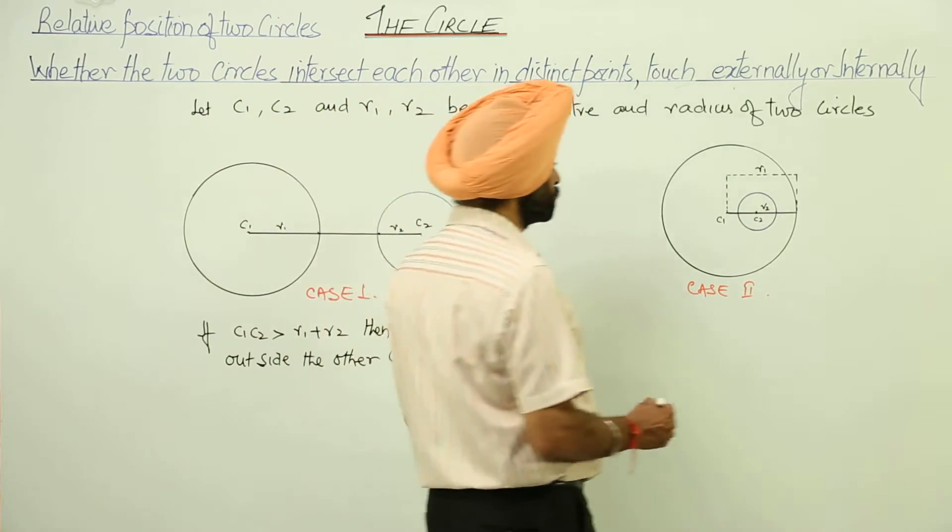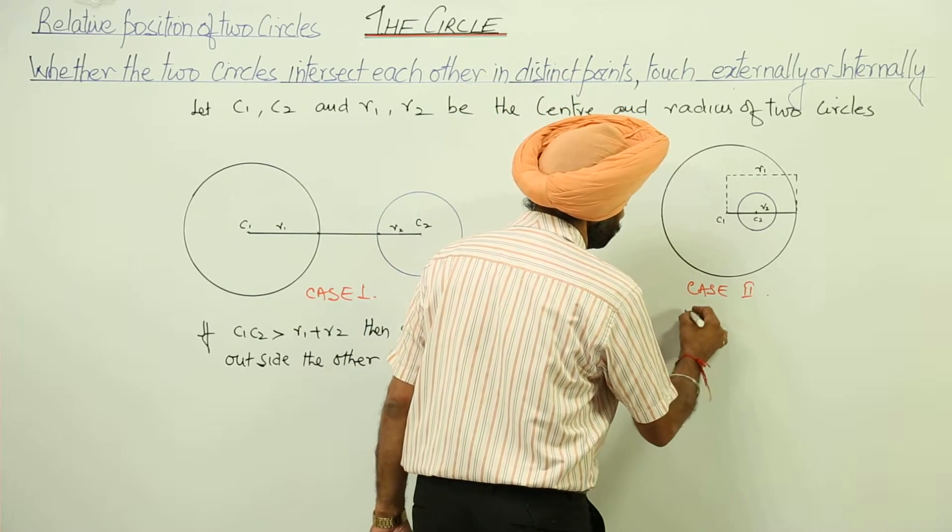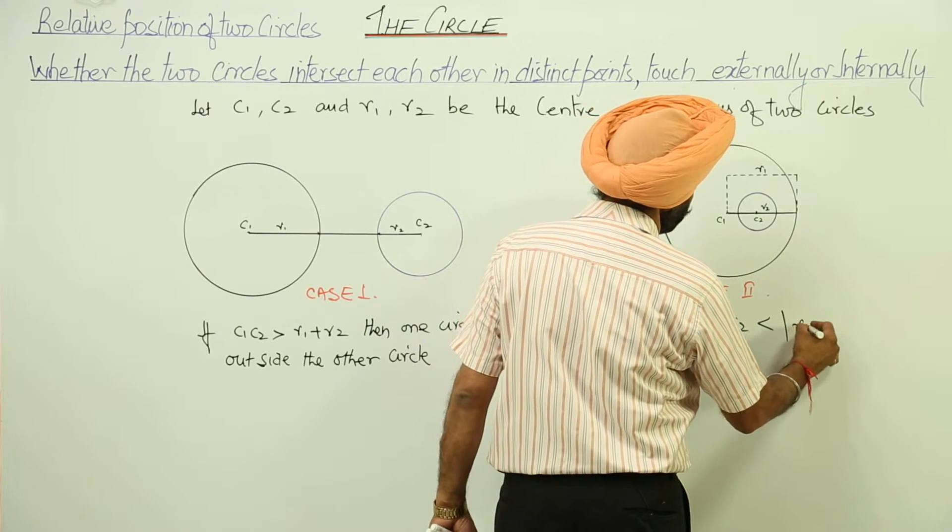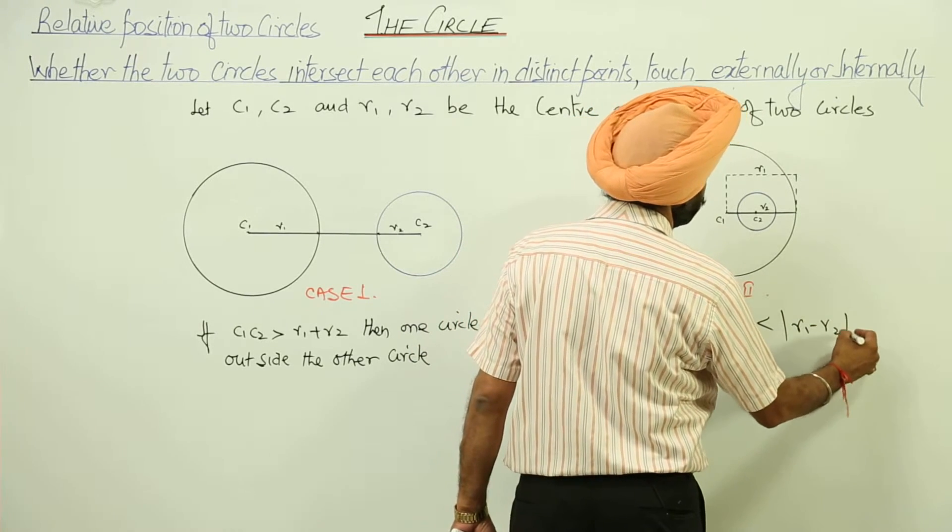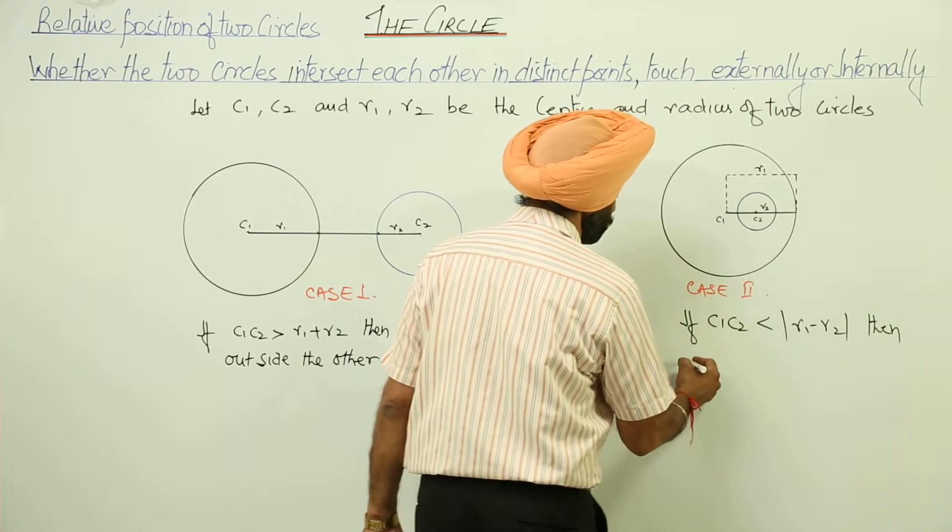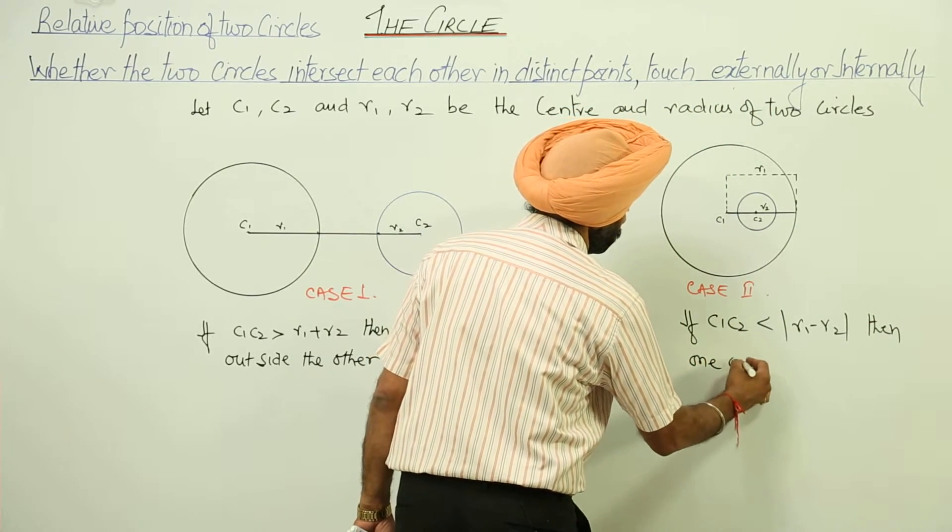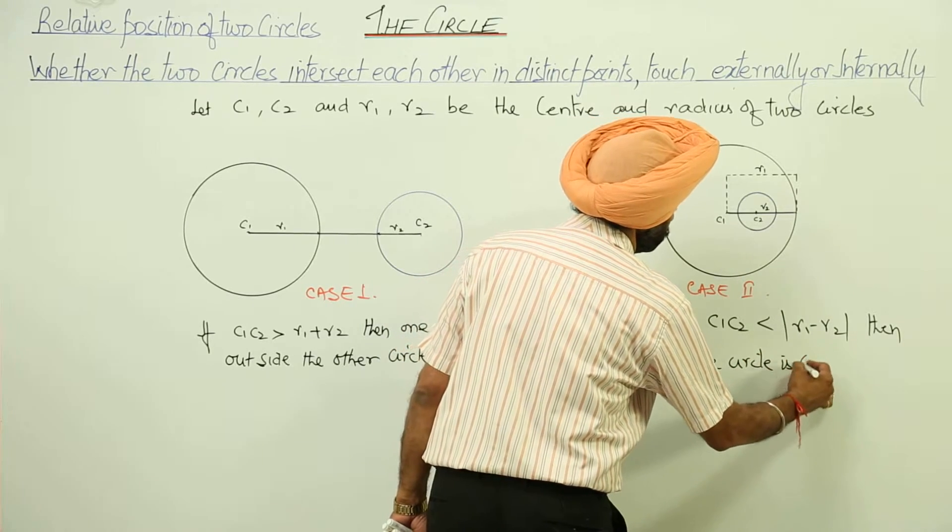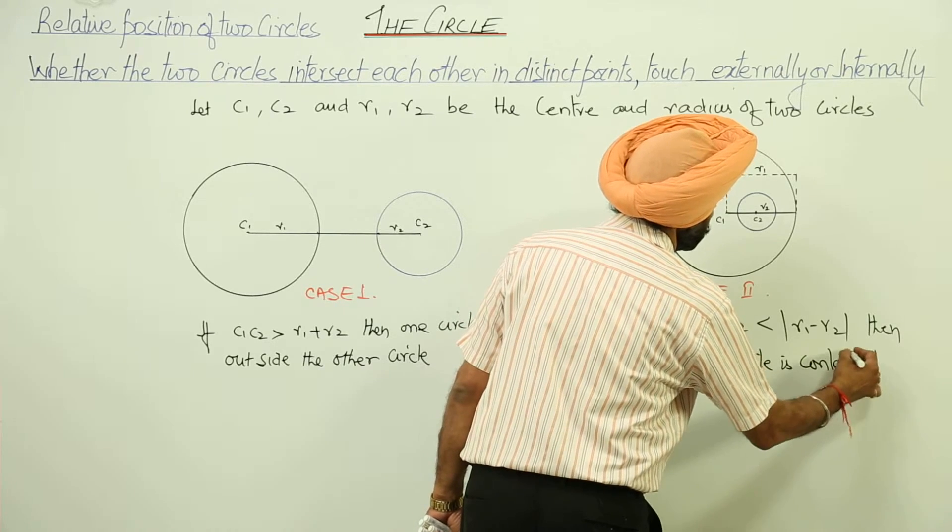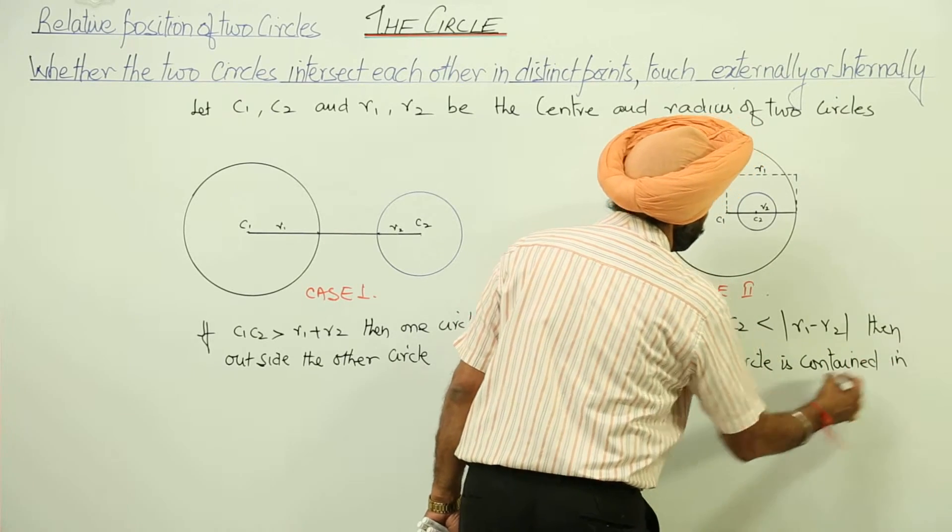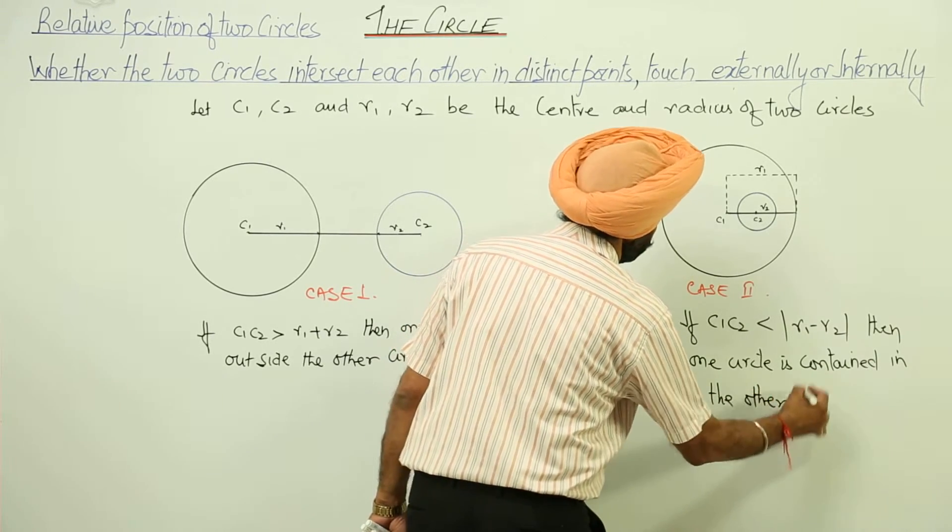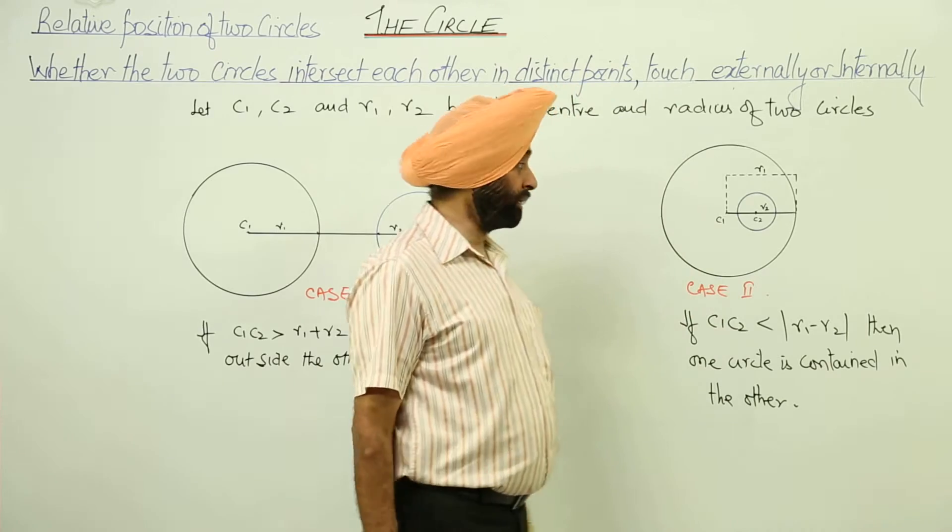Case 2: if c1, c2 is less than the absolute value of r1 minus r2, then one circle is contained in the other.